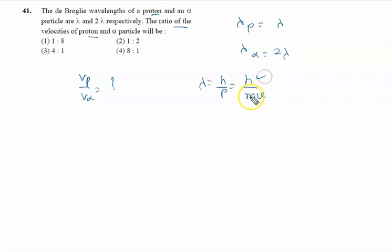h is a constant, which means we can say mv is given by h upon lambda, or v is given by h upon lambda times m.